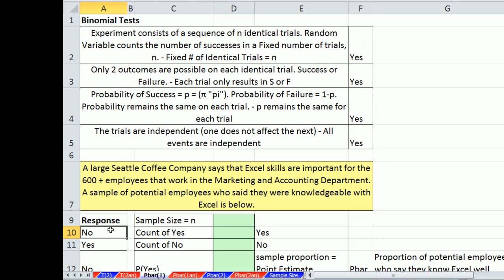Now, in order to use the normal distribution, we have to make sure and check that our binomial tests are met, and there are four of them. So the experiment consists of sequential and identical trials. So in essence, fixed number of identical trials, yes, that's true. Two outcomes identical on each trial. Each trial only results in a success or failure. So they either answer yes, they say they're knowledgeable in Excel, or no, they're not.